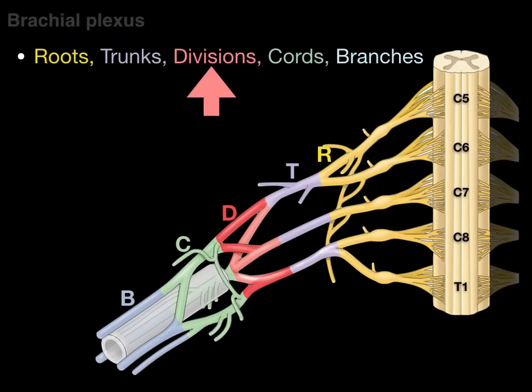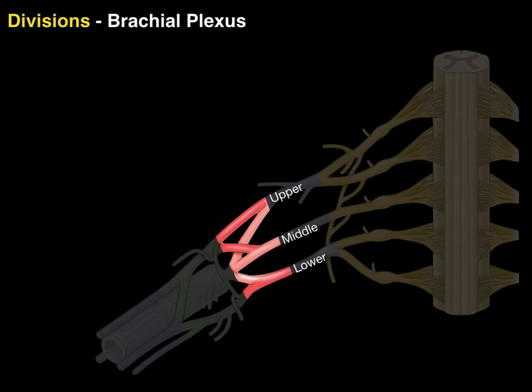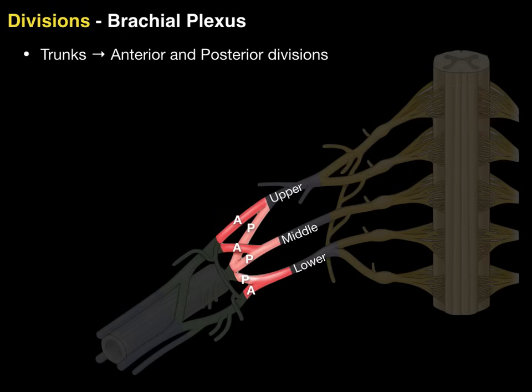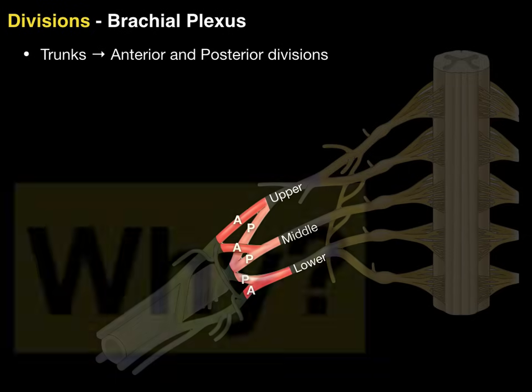Next, we'll talk about divisions of the brachial plexus. The trunks give rise to anterior and posterior divisions. The upper trunk has an anterior and posterior division, the middle trunk bifurcates into an anterior and posterior division, and the lower trunk bifurcates into anterior and posterior divisions as well.